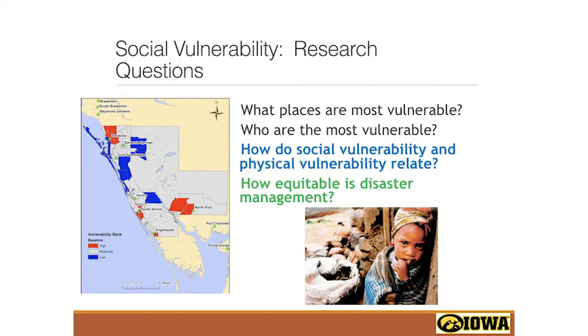In social vulnerability research, there are several broad questions I'm always interested in: Which places are most vulnerable? Who are the most vulnerable people in those places? You can also compare social vulnerability with physical hazard like flood depths — how do the two compare? And having this measure of social vulnerability, something I've been doing more recently is using it to evaluate equity in existing programs. After a disaster, there's disbursement of resources — how equitable is that disbursement? Is it actually going to the people that need it most? Open question.